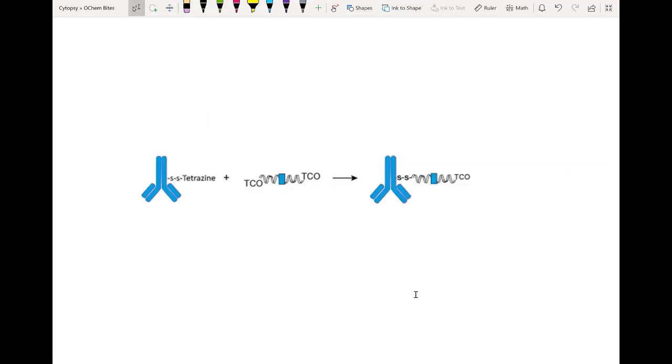We utilize the tetrazine which is already attached to our antibody via those disulfide linkages to make the final conjugate in high yield.